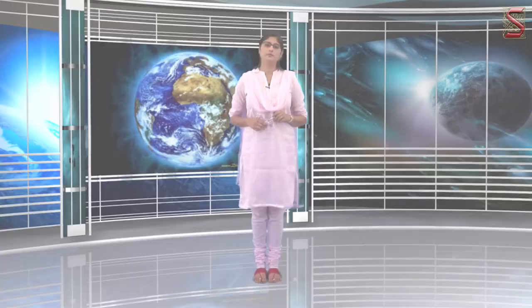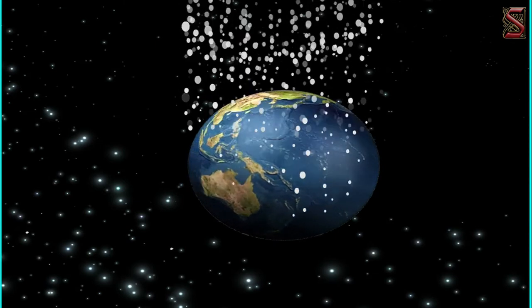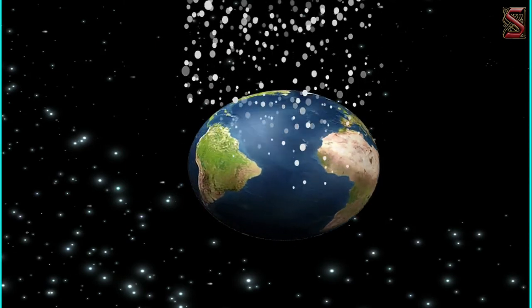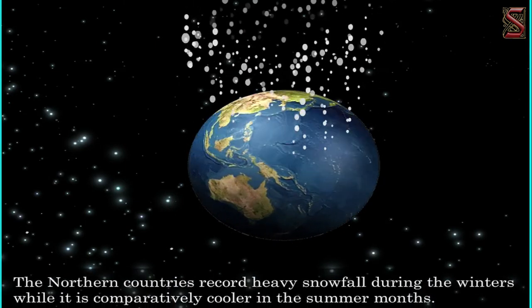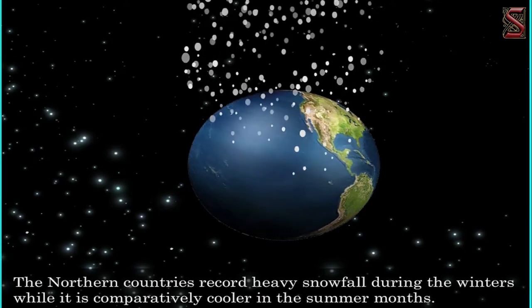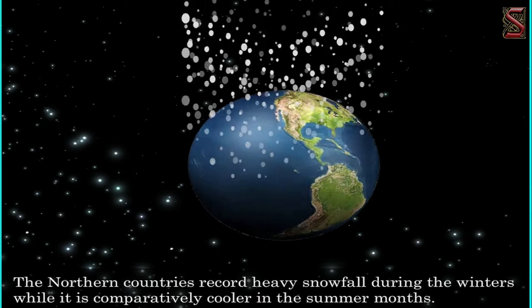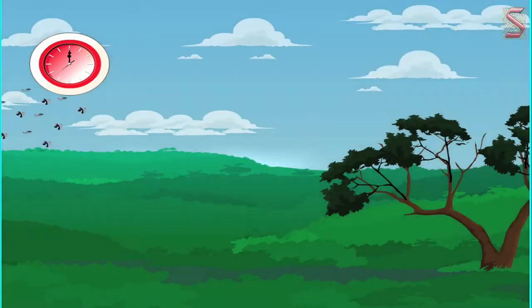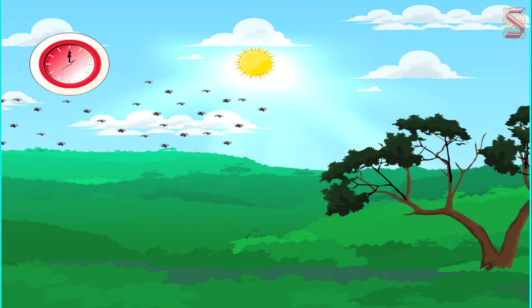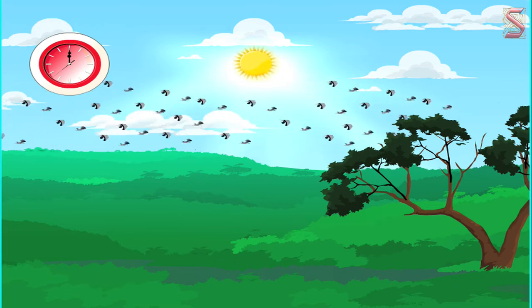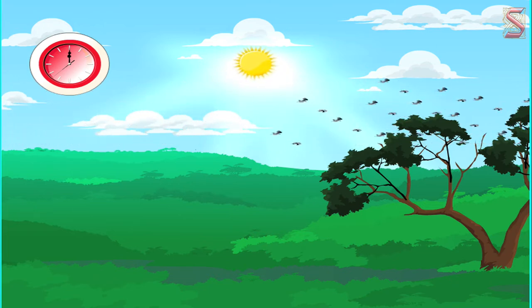But students, have you noticed any snowfall in your region any time? Certainly not. But why not? Only some parts of the earth receive snowfall during cold months. The northern countries record heavy snowfall during the winters, while it is comparatively cooler in the summer months. Another interesting thing is that the length of the day in these countries is longer during summer months — so long that one can see the sun even at midnight.